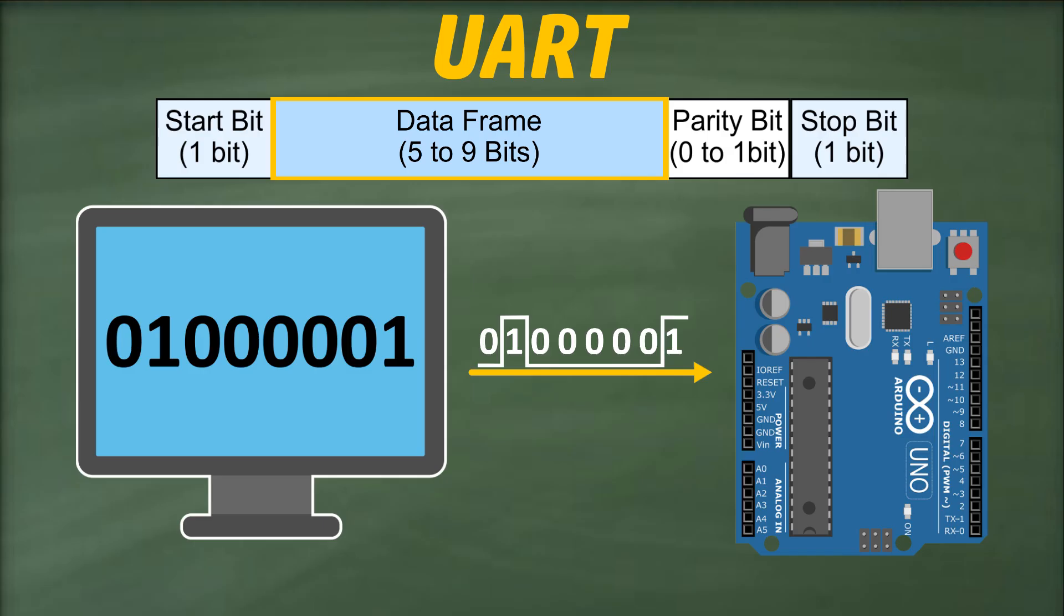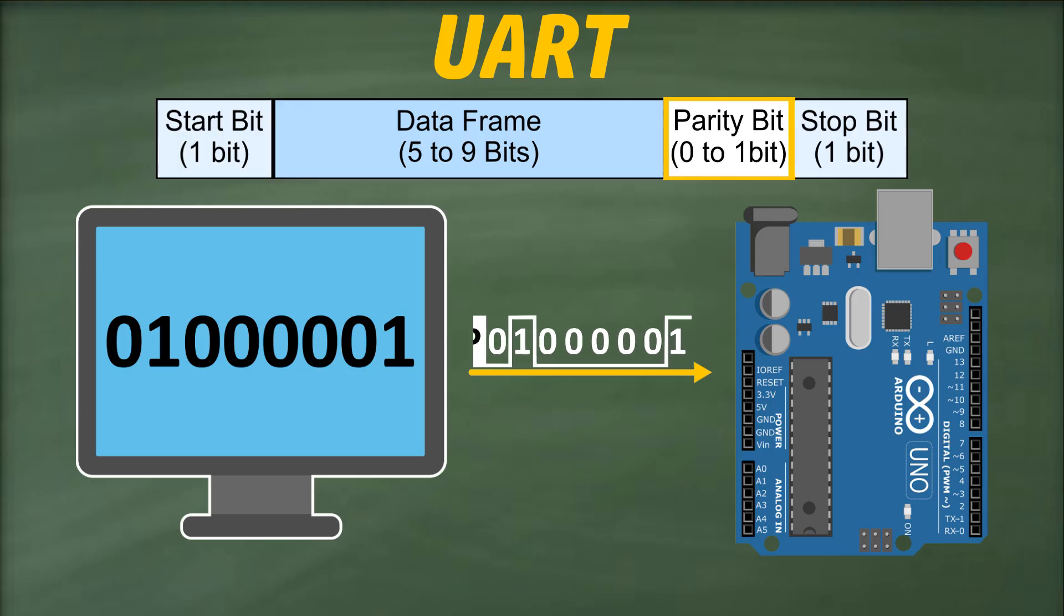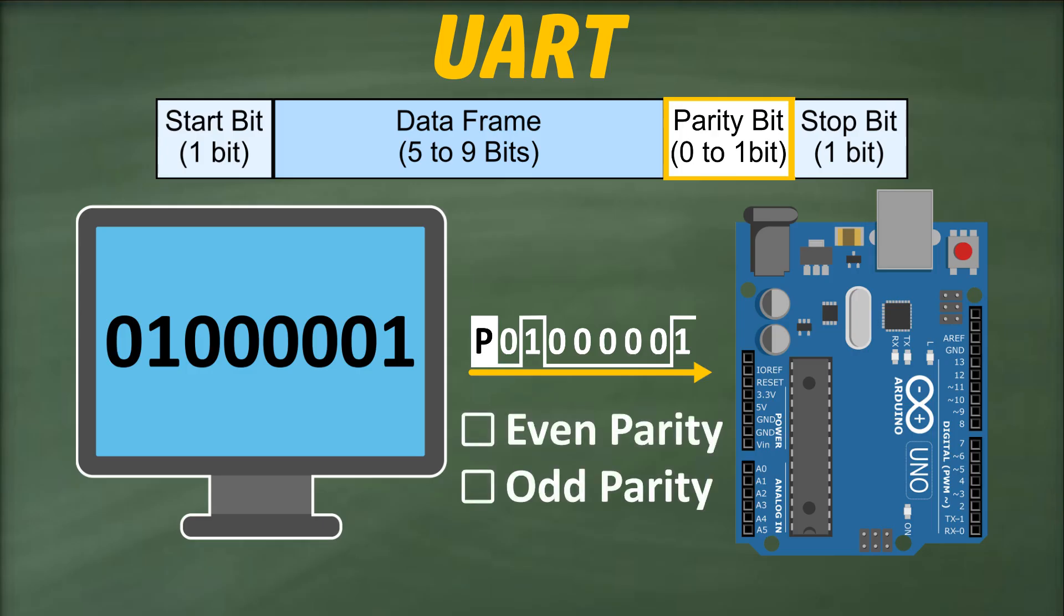After the data bits, we can optionally include a parity bit. Its role is to inform the receiver whether the data packet is corrupted or not. Here's how it operates. Both the receiver and transmitter must decide in advance on the type of parity they'll use, either even or odd.